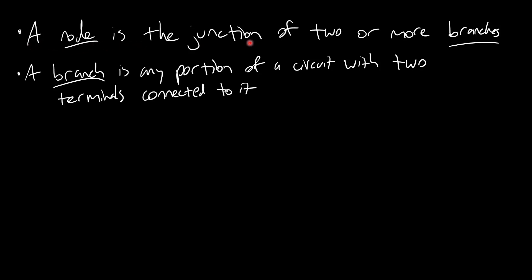A node is the junction of two or more branches. Okay great, well what is a branch? A branch is any portion of a circuit with two terminals connected to it. Okay great, what does that mean?